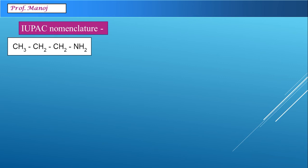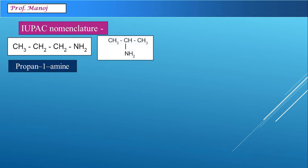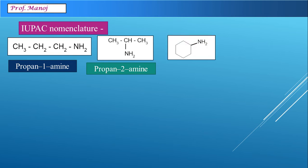Let us see some concrete examples. Here the –NH2 group is connected to the first carbon atom of a 3-carbon chain, so the name will be propan-1-amine. Another example has –NH2 connected to the second carbon atom of a 3-carbon chain, so the name is propan-2-amine. A cyclohexane ring connected to an amine group is called cyclohexanamine.